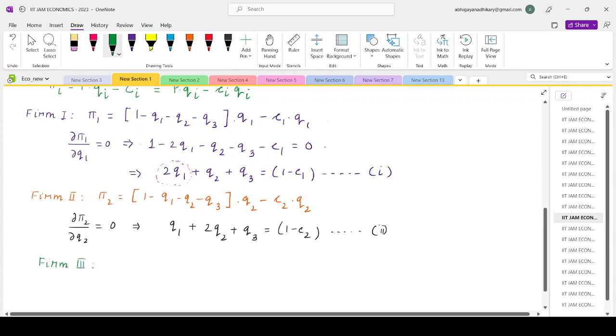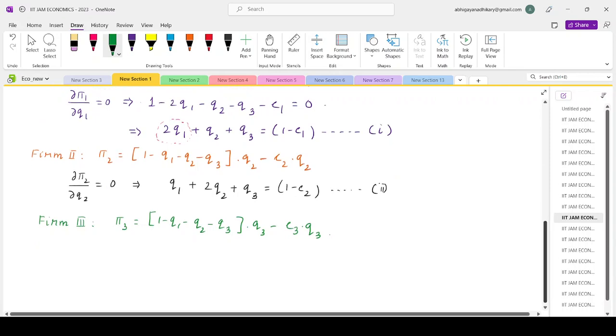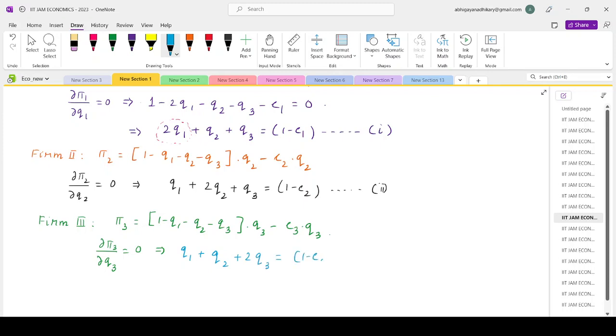For firm 3, the profit function is pi 3 equals 1 minus Q1 minus Q2 minus Q3 multiplied by Q3 minus C3 times Q3. Firm 3 will maximize profit by choosing Q3. That would mean there will be a 2Q3 term and the rest will be just Q1 and Q2. So Q1 plus Q2 plus 2Q3 equals 1 minus C3.